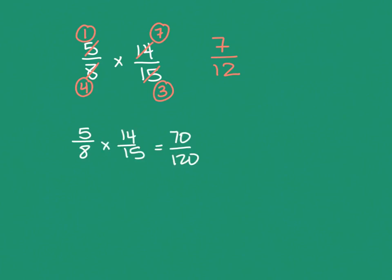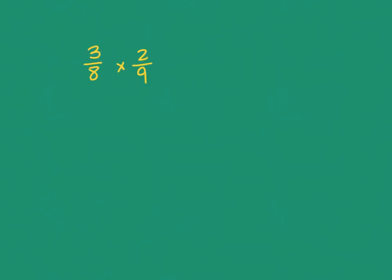By the way, if we hadn't cross reduced — or simplified the factors, as they call it; I always refer to it as cross reduce — we would have multiplied and got 70 over 120. Then we'd look at that number to reduce it. I would have noticed both end in zero, so ten divides evenly into both. Dividing by ten gives seven twelfths — the same answer. But sometimes it's not as easily seen with really big numbers, or you have to reduce several times. So I find it personally easier to go with cross reduction; it keeps things nice and simple all the way through.